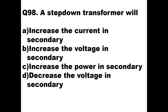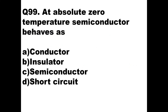Question number 98. A step down transformer will do what? Options are increase the current in secondary, increase the voltage in secondary, increase the power in secondary, or decrease the voltage in secondary. Obviously, step down means decrease. So option D — decrease the voltage in secondary — is the right answer for a step down transformer.